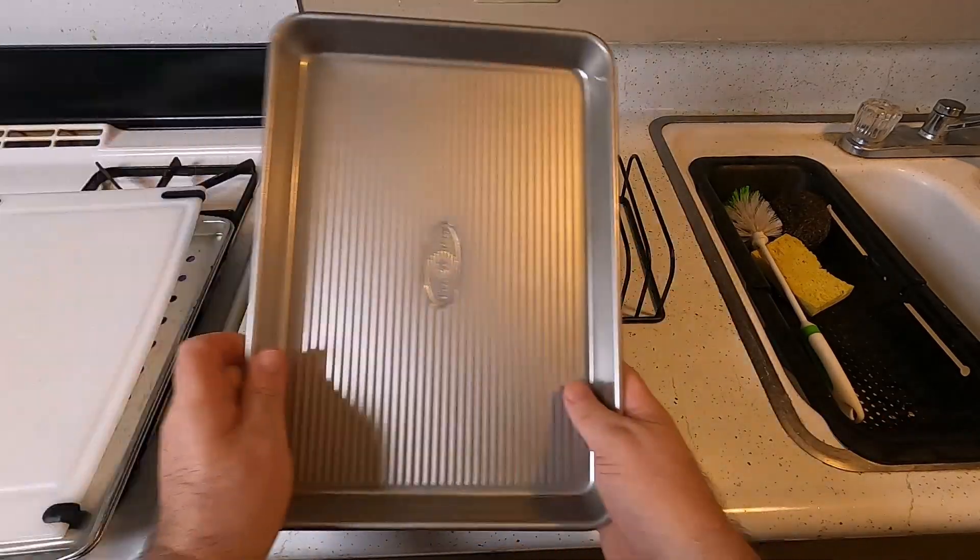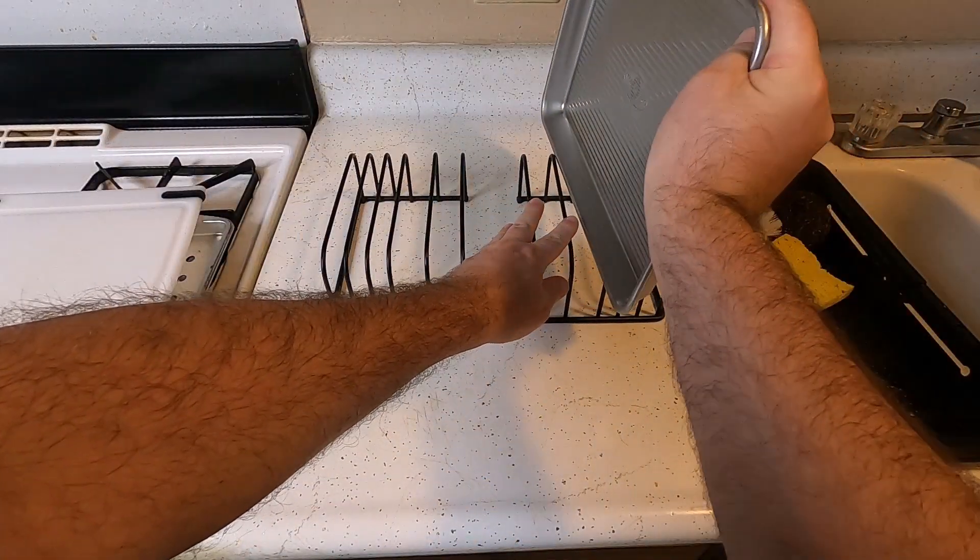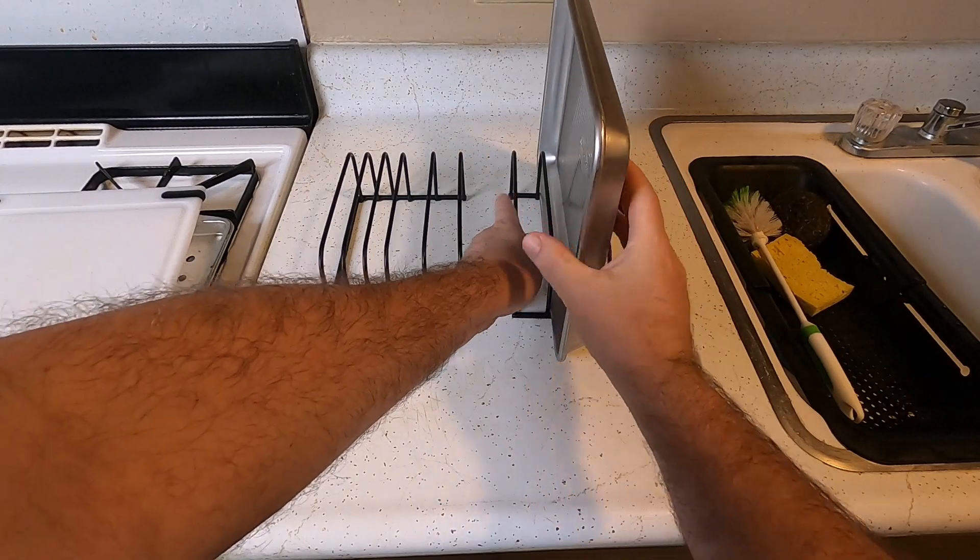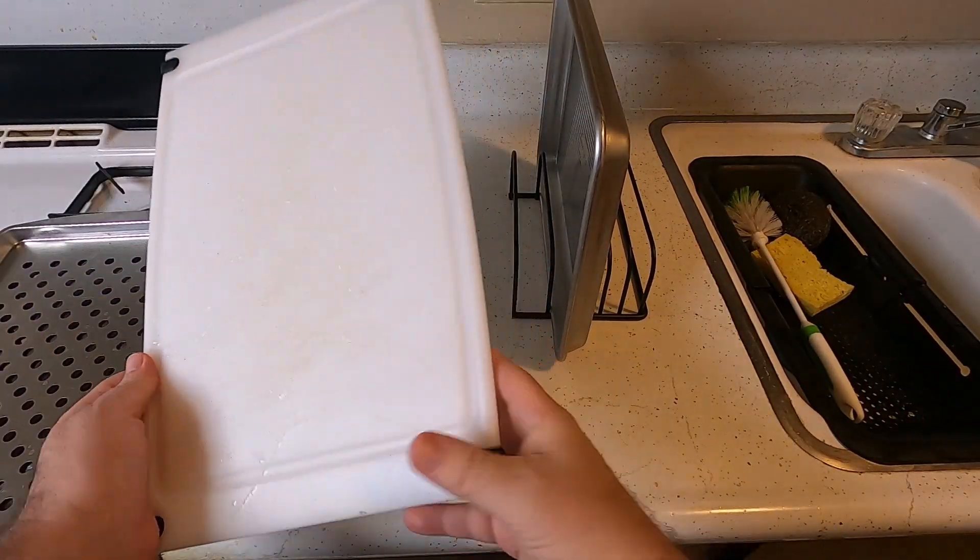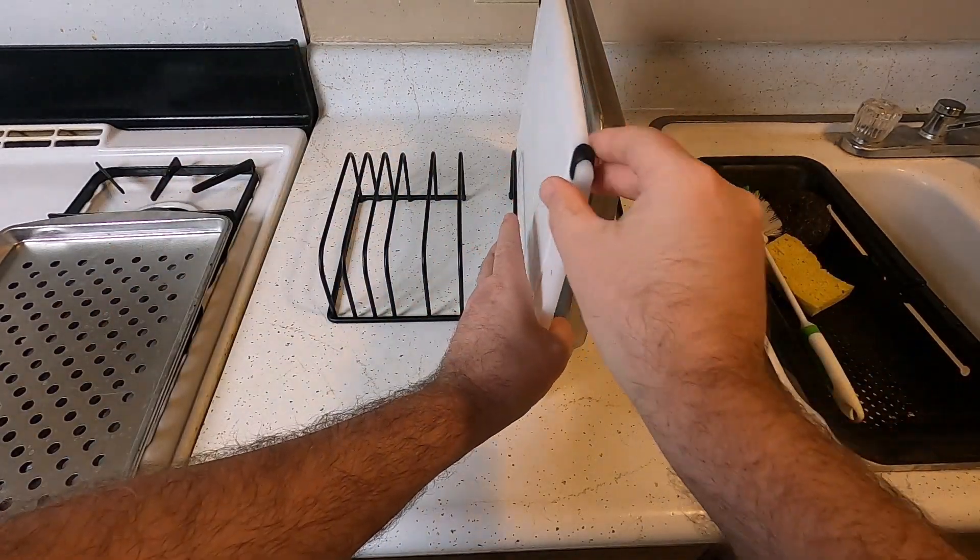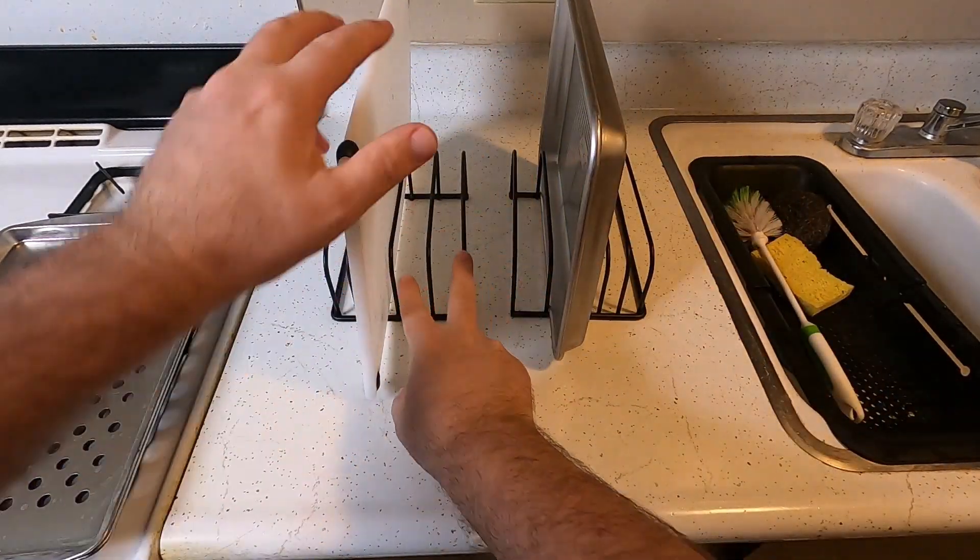So here I have a baking sheet, so they just basically fit just like that. You're going to be able to organize these vertically. And then of course I have a cutting board right here and that'll just fit just like that. You can put it in different ones.